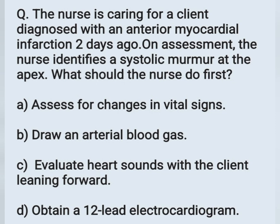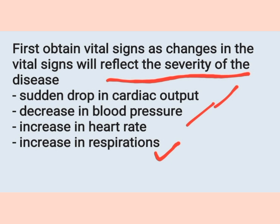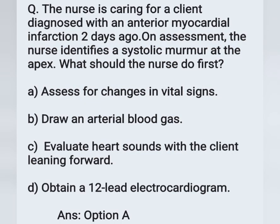The nurse identifies a systolic murmur at the apex in a patient with anterior MI diagnosed two days ago. The nurse should first assess vital signs, as changes in vital signs reflect the severity — a sudden decrease in cardiac output, blood pressure, heart rate, or respiration indicates deterioration. She should then inform the physician. Option A is correct.